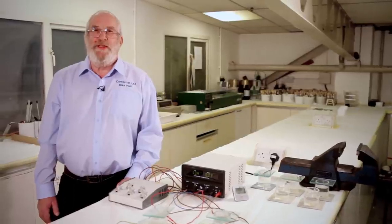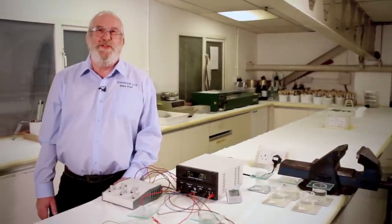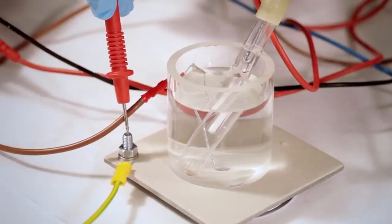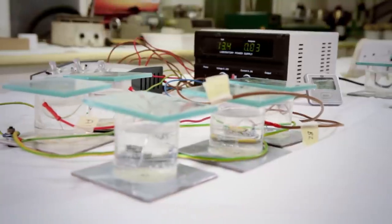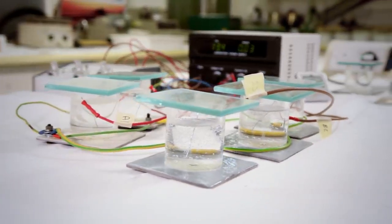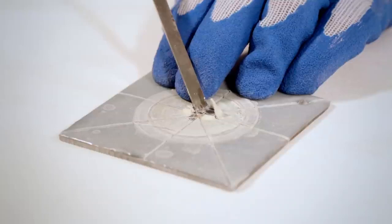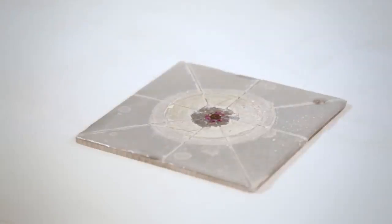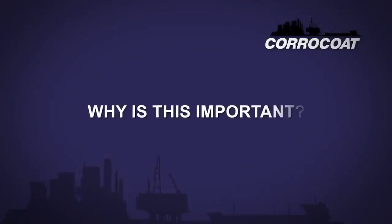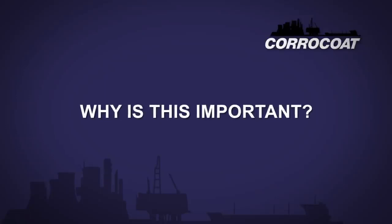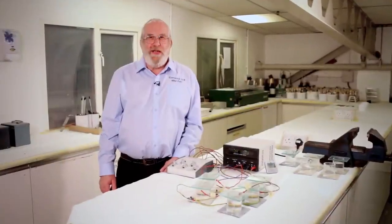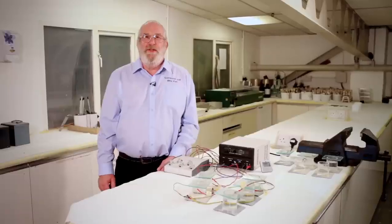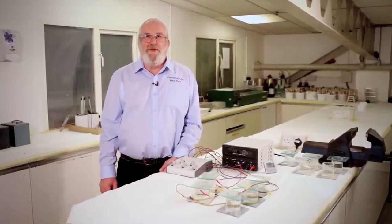Cathodic disbondment testing is one of the tests used for assessing the performance of a protective coating. It's where a coating disbonds due to a cathodic reaction at a damaged site through the coating to the substrate. This disbonding occurs by generation of hydroxyl ions which raises pH at the coating substrate interface and causes the coating to disbond. This is important because the ability of a coating to resist cathodic disbondment correlates with performance in other areas such as adhesion and moisture vapor transmission.